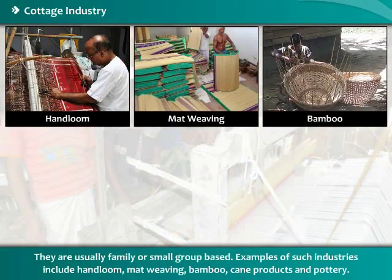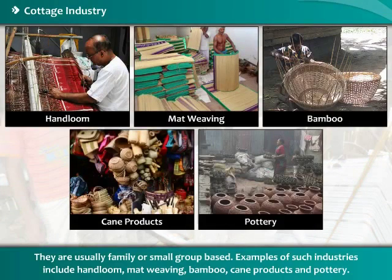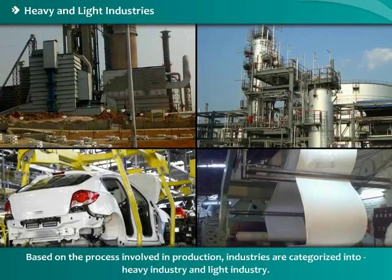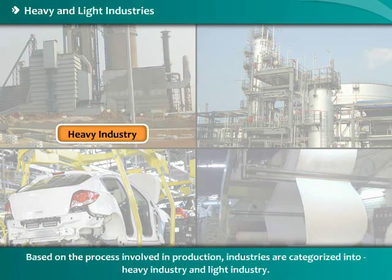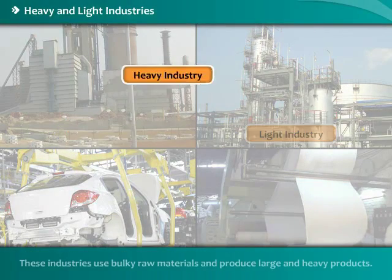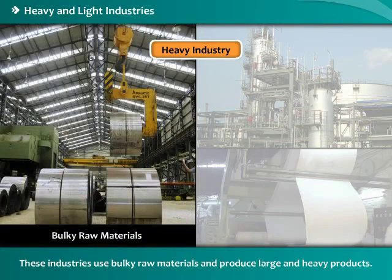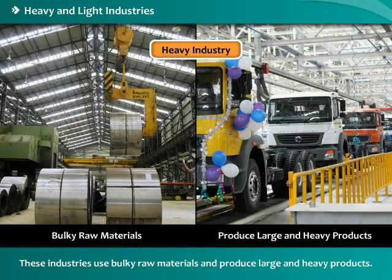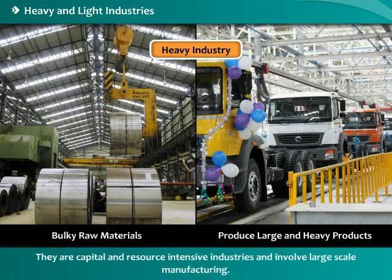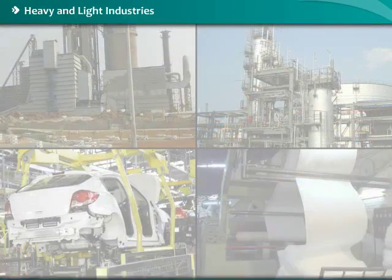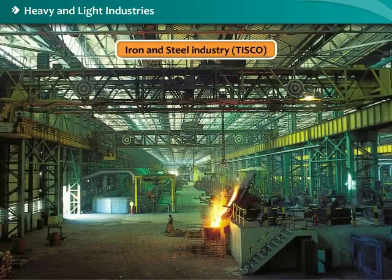Cottage industries are very small in size with low investment; they are usually family or small group based. Examples include handloom, mat weaving, bamboo cane products, and pottery. Based on the process involved in production, industries are categorized into heavy industry and light industry. Heavy industries use bulky raw materials and produce large and heavy products; they are capital and resource intensive.